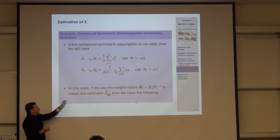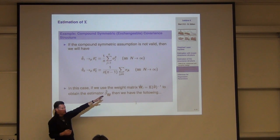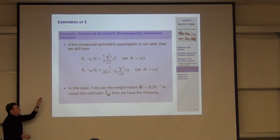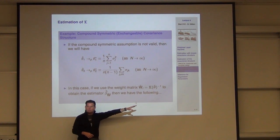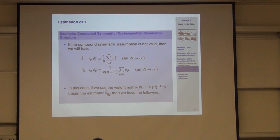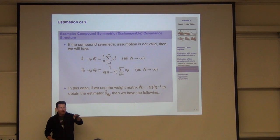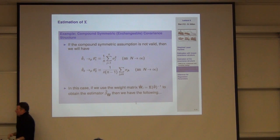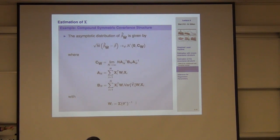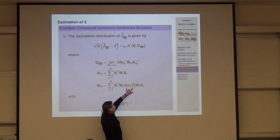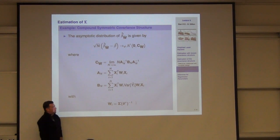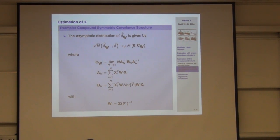So the question becomes: what do you estimate when the assumption is wrong? Your estimate of theta-one averages variances across observations, and theta-two averages covariances — but they're all different values now. That's what you're converging to. And since we used this weight matrix, our variance is going to look like A-inverse B A-inverse — the sandwich form — because there's no cancellation. We get the full sandwich: N times A-inverse B A-inverse.